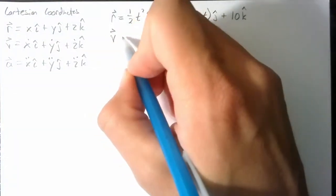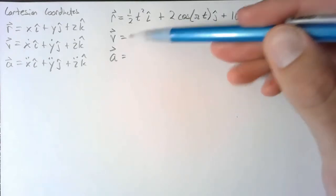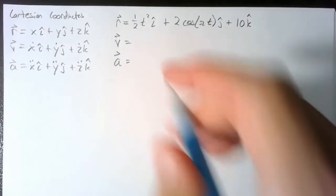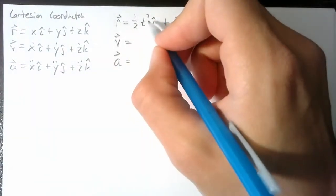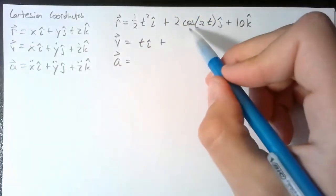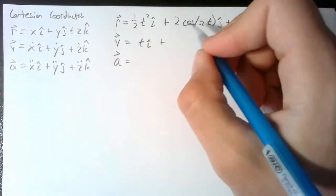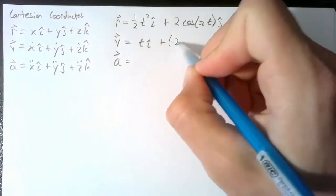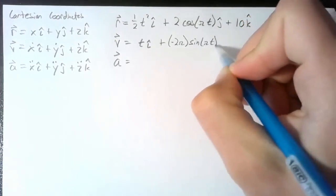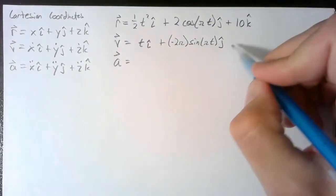We're going to take the time derivative a couple of times to find velocity and acceleration. Taking the time derivative once, one-half t squared becomes t in the i-direction. The derivative of cosine of pi t is negative sine of pi t times pi, so we end up with negative 2π times sine of pi t in the j-direction. The time derivative of the constant gives us zero.